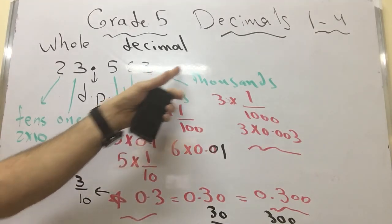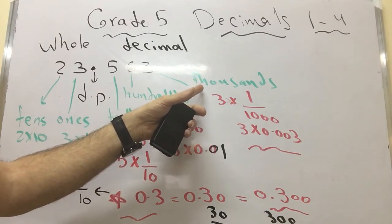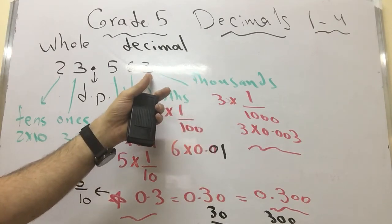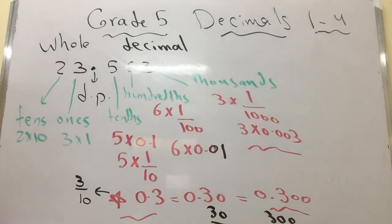The next digit is in the thousandths place. It means it equals 3 multiply 1 over 1,000.